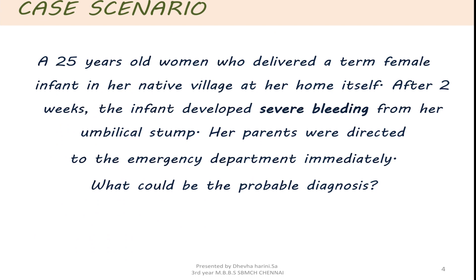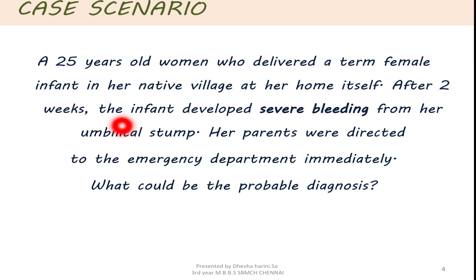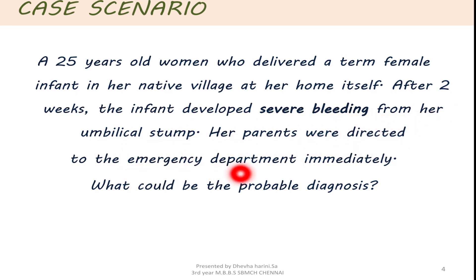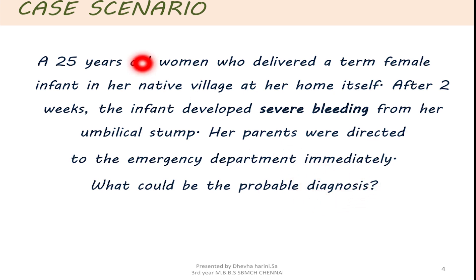Case scenario: a 25-year-old woman who delivered a term infant at her home itself. The infant was normal up to two weeks, after which she developed severe bleeding from her umbilical stump. Her parents were directed to the emergency department immediately. So what could be the probable diagnosis? I will discuss the diagnosis of this case briefly.